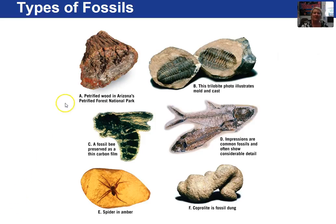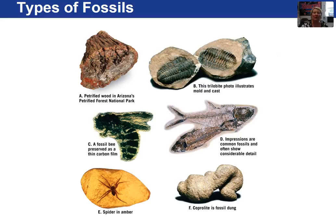See if you can identify each of these types of fossilization before looking at the actual name. Hopefully you recognize petrified wood, which is permineralization. A mold and cast is a type of replacement fossilization. This is carbonization — an impression where the carbon has been removed. An insect in amber, and then a trace fossil, in this case a coprolite.